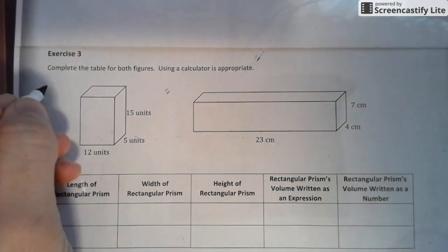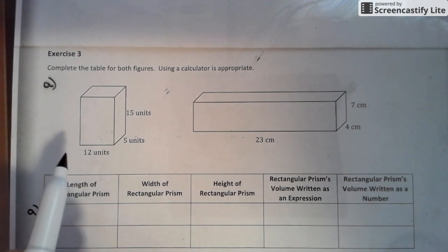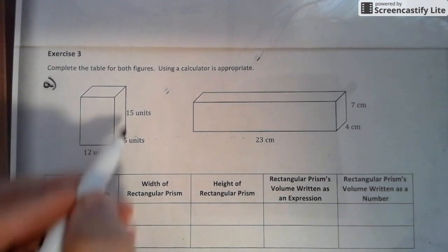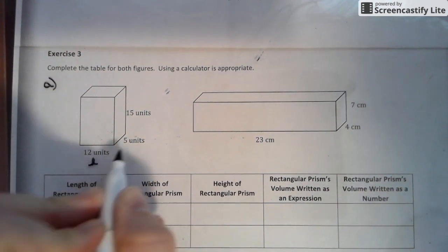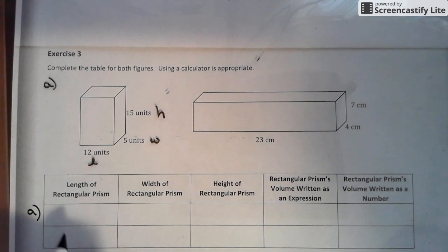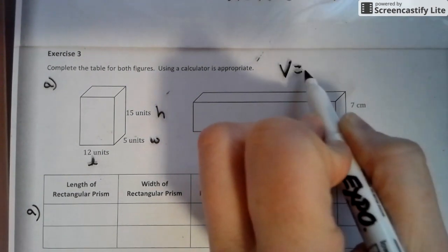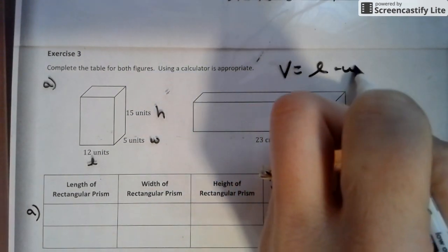Now we have two here, but we're only going to do one of them. If you notice, we're not just dealing with a length. We have a length, a width which sticks back, and a height. Our formula for this one will be volume equals length times width times height.